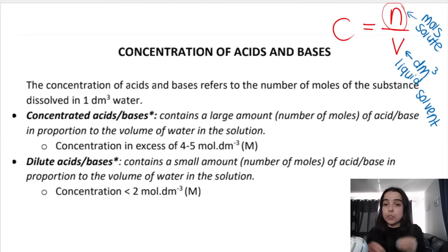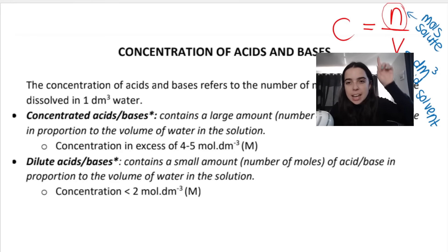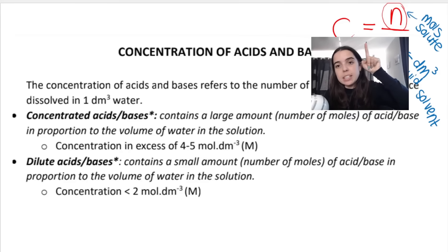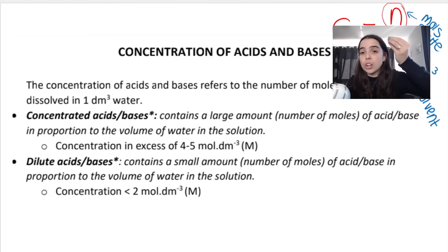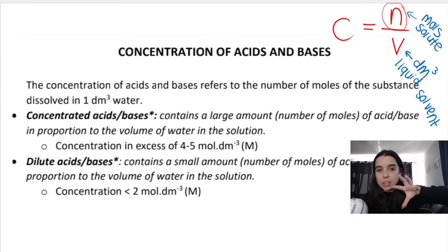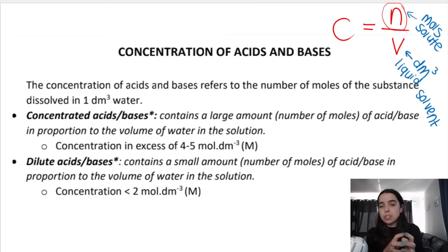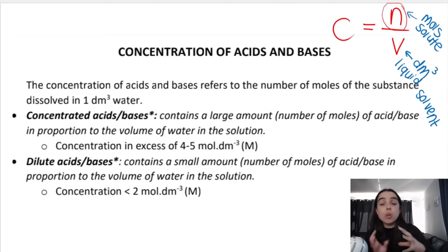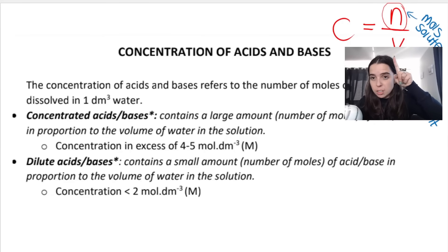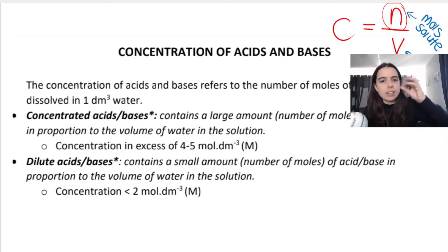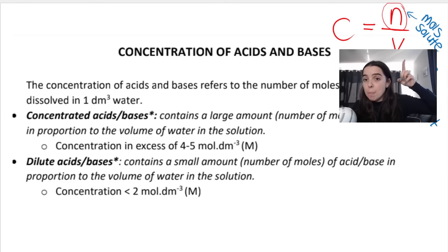Concentration — being concentrated versus dilute — has nothing to do with being strong versus weak, and nothing to do with ionization. It has to do with the formula C = n/V. N is the number of moles of solute, and V is volume of solvent. Concentration refers to how much solute is dissolved per cubic decimeter of water. If I have a concentrated acid or base, I have a large number of moles relative to the water. If I'm dilute, there's a small number of moles in a large volume of water.